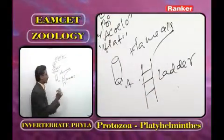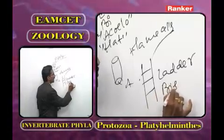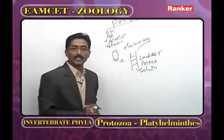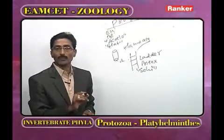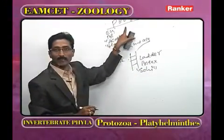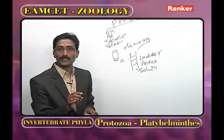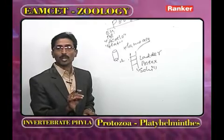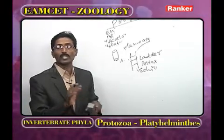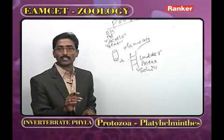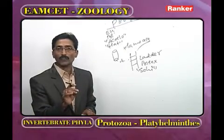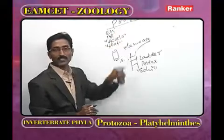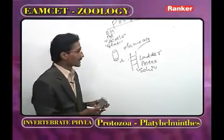In Platyhelminthes, majority are bisexual. Only one animal is unisexual — Schistosoma — in which male and female are separate. Platyhelminthes is classified into three classes: Turbellaria, Trematoda, and Cestoda.